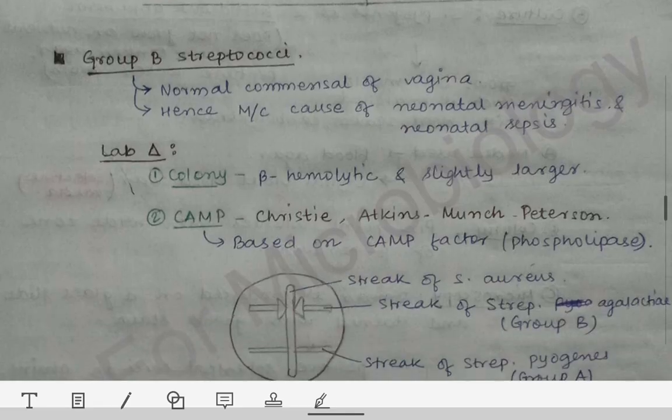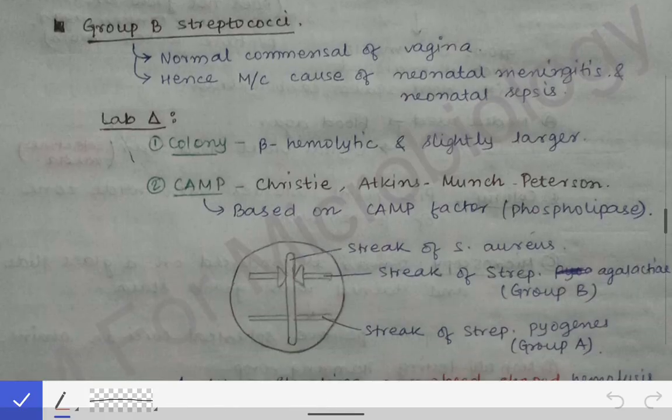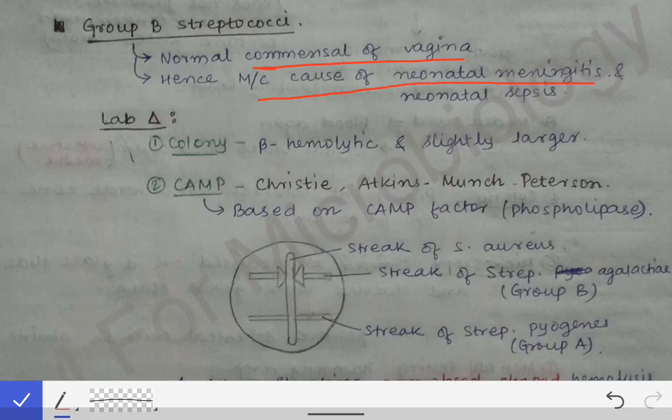The most important fact about Group B Streptococcus is that it is a normal commensal of the vagina. During normal vaginal delivery, when the baby passes through the vaginal canal, it has a high chance of getting infected with that commensal — Group B Streptococcus or Streptococcus agalactiae — making it the most common cause of neonatal meningitis or neonatal sepsis.